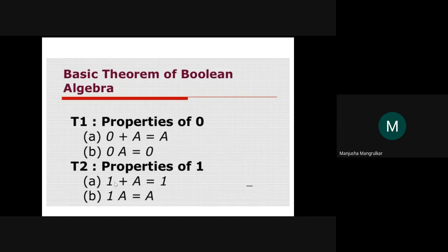Theorem 2 is properties of 1. Any variable OR-ed with 1 gives output 1. A dot 1 equals A: if A is 0, output is 0; if A is 1, output is 1. So 1 AND A equals A — the output depends on the value of A. These are the properties of 0 and properties of 1.